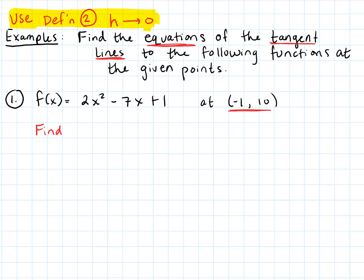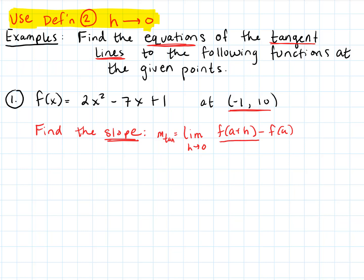The first thing we have to do is find the slope. To find the slope of a tangent line, we have to use calculus — we have to use this limit. We're going to use the second definition: the limit of the slopes of the secant lines as H goes to zero. The slopes of the secant lines are f of a plus H minus f of a, all over H — H being the distance on the x-axis between our two points P and Q. This is our a value, and this is our f of a value.